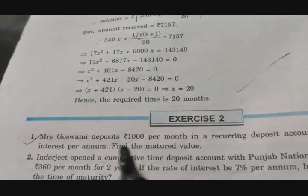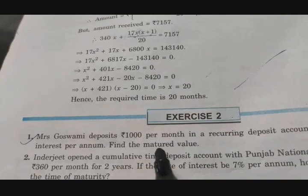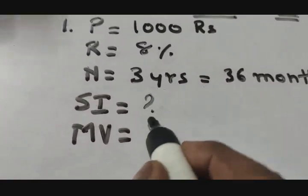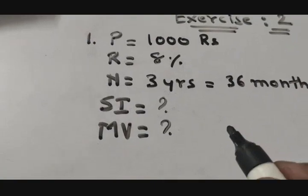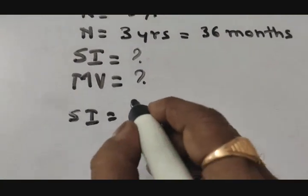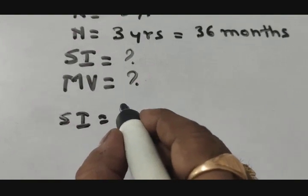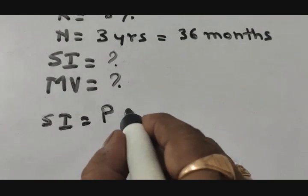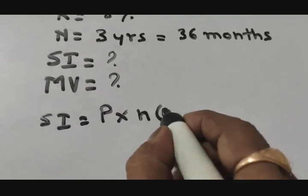Then what else we have to find here? Find the maturity value, that means you have to find out the simple interest. So simple interest is a question mark and maturity value is a question mark.